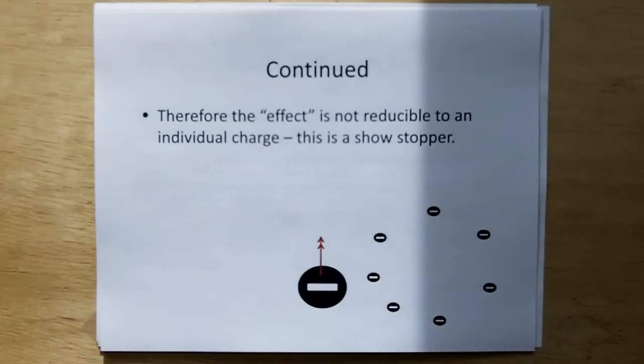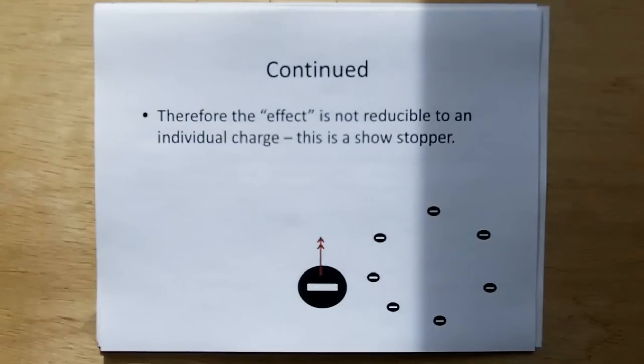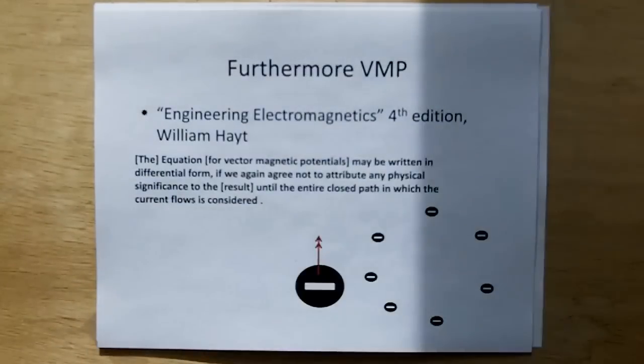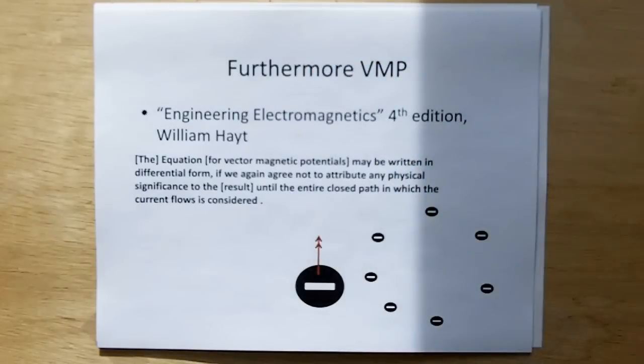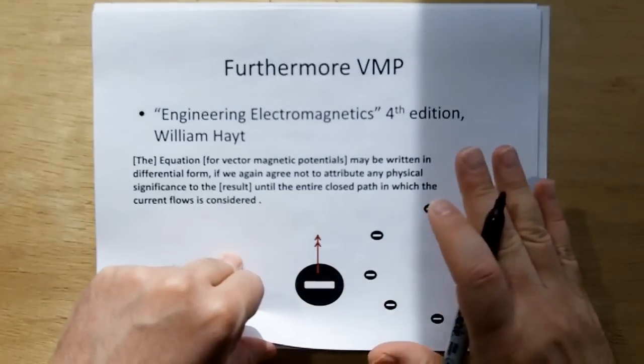Therefore, the effect from both Faraday's law and vector magnetic potentials cannot be reduced to the effects between point charges. And charges are the most fundamental building block of electromagnetism, yet induction doesn't work among point charges? Really? This is ridiculous. And even in vector magnetic potentials, they even state the equation for vector magnetic potentials may be written in differential form if we again agree not to attribute any physical significance to the result until the entire closed path in which current flows is considered. They even admit it doesn't apply. It only applies to closed paths. And I said, this is ridiculous.